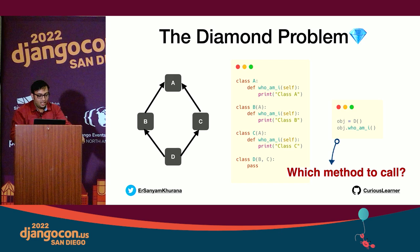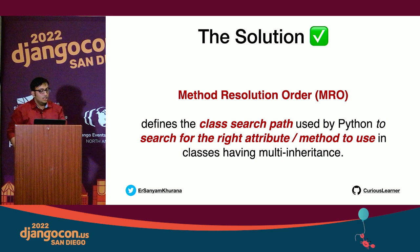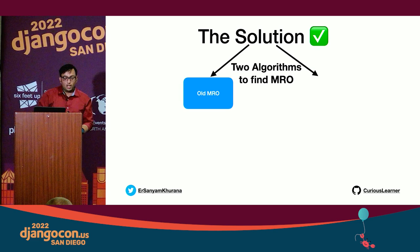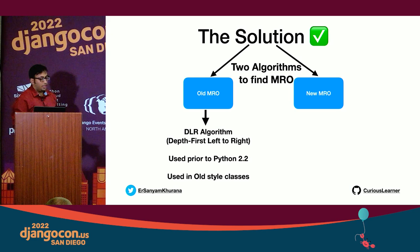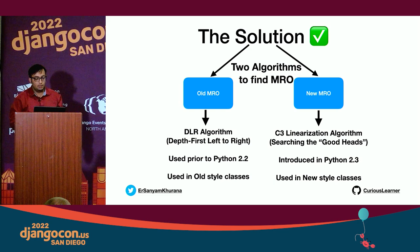The solution for this problem is method resolution order, which defines the class search path Python uses to find the right attribute or method in classes with multiple inheritance. There are two algorithms: the old MRO algorithm — depth-first left-to-right (DLR) — used prior to Python 2.2 in old-style classes, and the newer C3 linearization algorithm introduced in Python 2.3, used in new-style classes.